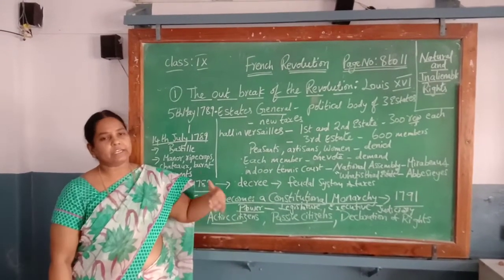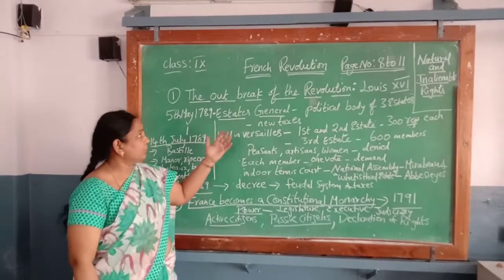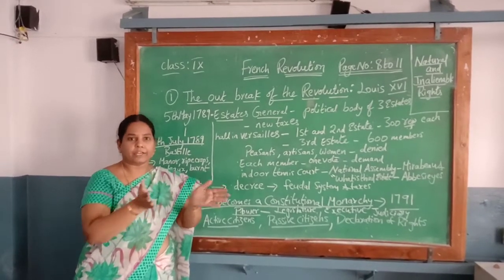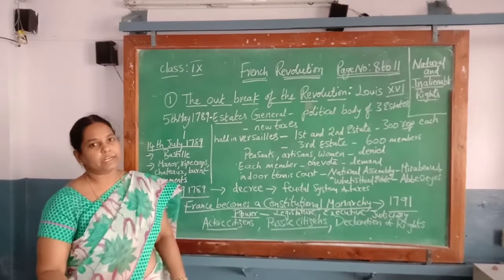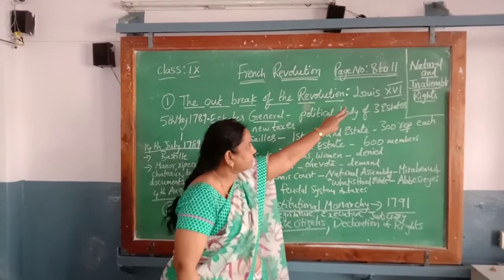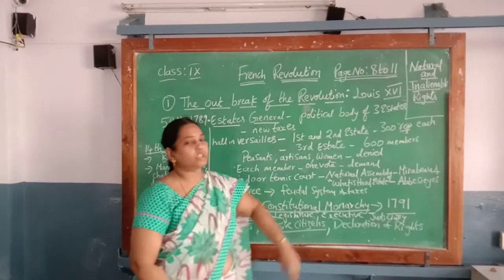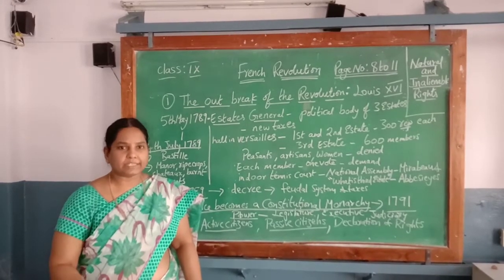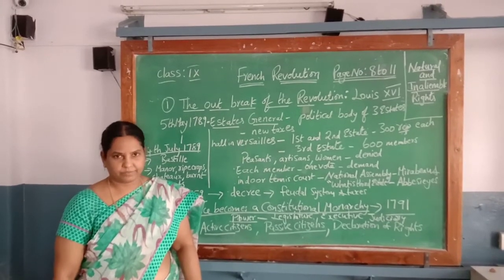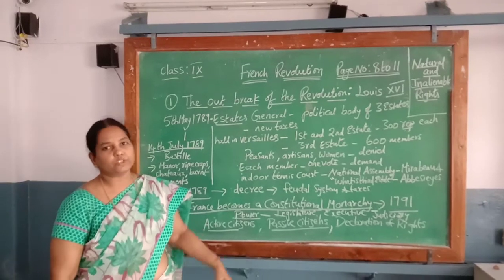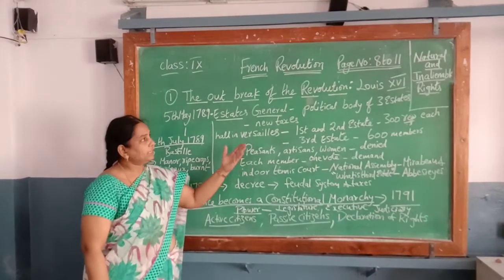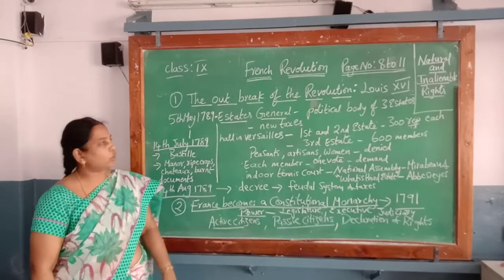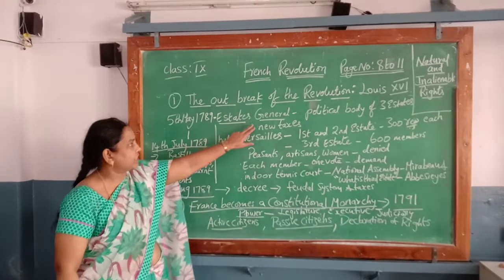So what is the immediate cause of the revolution — with what immediate cause did the revolution actually break out? We have already learnt that during the 18th century the king was Louis XVI. He made a proposal to increase taxes. There is a system followed in France where he alone cannot take the decision — he needs to call the Estates General.